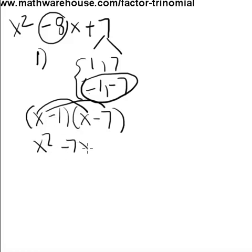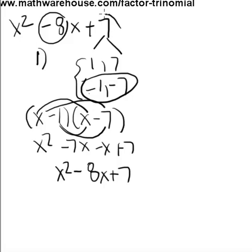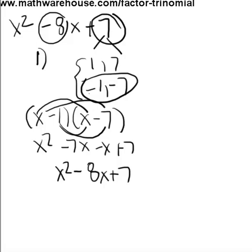x squared minus 7x minus x, minus 1 times minus 7 is plus 7. And as you see, this simplifies to be x squared minus 8x plus 7. Find the factors and then just decide which of the factor pairs adds up to the middle coefficient.